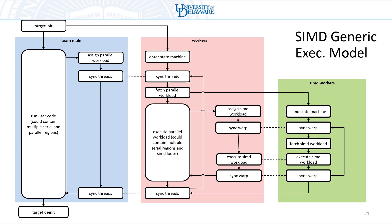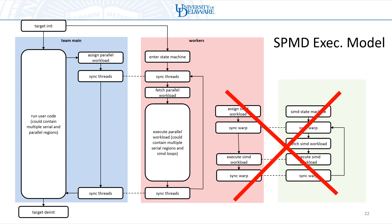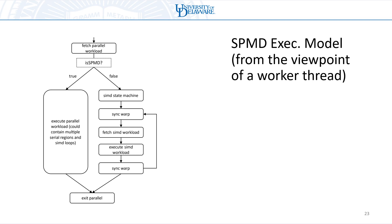Just like with the optimized SPMD execution model for teams and parallel, we have a separate SPMD model for SIMD as well. This effectively means that when we reach the step where we fetch the parallel workload, if that parallel region is determined to be SPMD-safe — safe to execute by all threads — then instead of branching, all threads, both the SIMD leaders and SIMD workers, just continue and execute the code. From the viewpoint of a SIMD worker thread, this is the decision flow: it checks if the region is SPMD; if it is, workers execute it directly; if not, they go into the state machine and wait for a SIMD loop.